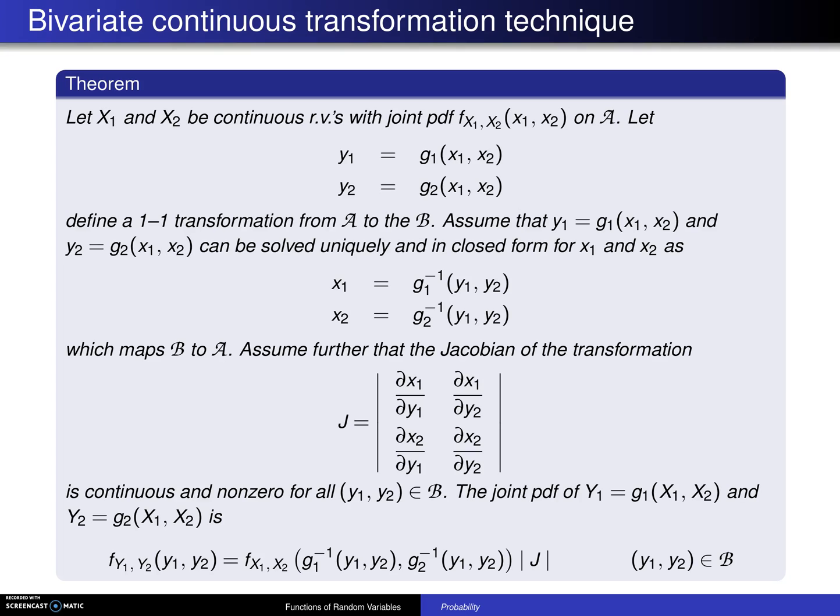So at this point we've considered the transformation of bivariate discrete random variables. Now we turn to the question of transformations of bivariate continuous random variables.